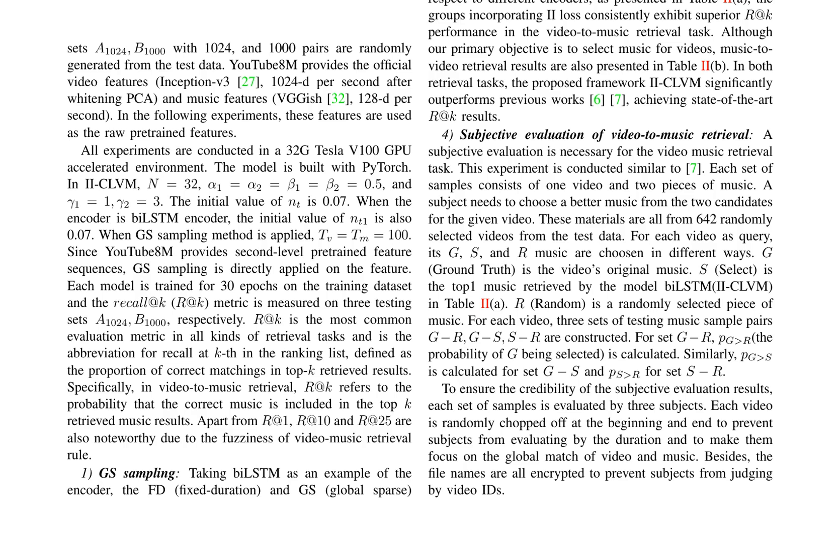The paper also presents a subjective evaluation of the video music retrieval task, showcasing the framework's performance on background music selection, with a probability of 88.52% that the ground-truth music is selected over a random piece of music.